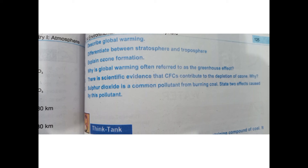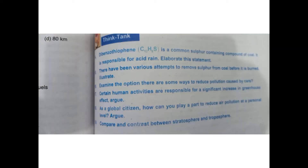Sulfur dioxide is a common pollutant from burning of coal — the effects of coal spray are significant. Sulfur dioxide is a common sulfur-containing component of coal and it is responsible for acid rain.